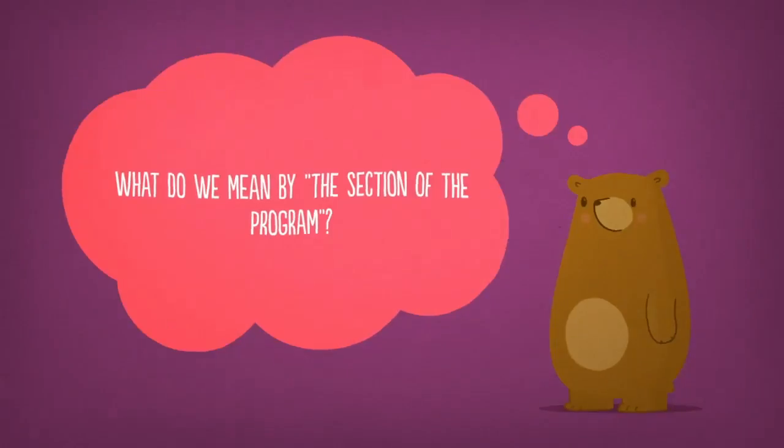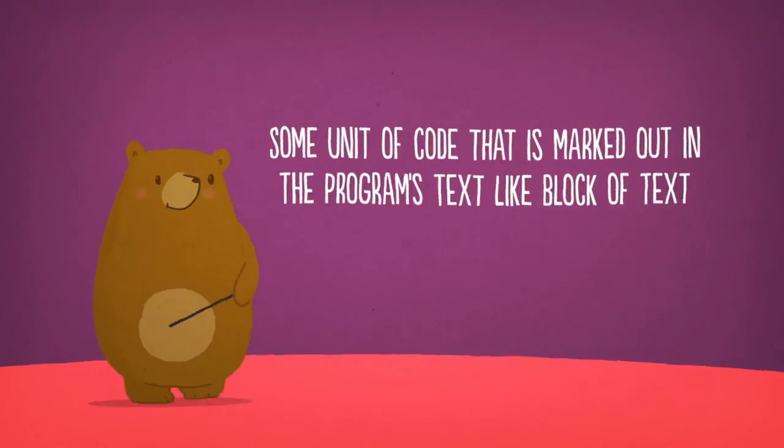What do we mean by the section of program? The simplest definition is some unit of code that is marked out in the program's text, like block of text in between the braces or function or module. This corresponds to the most common definition of scope, the lexical scope.